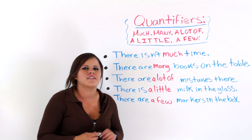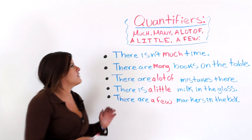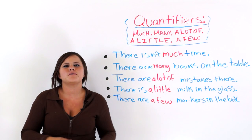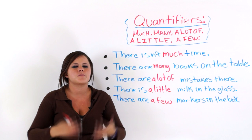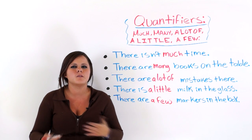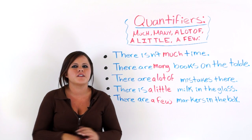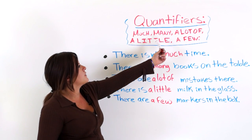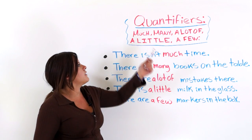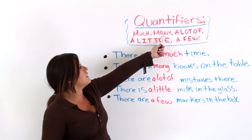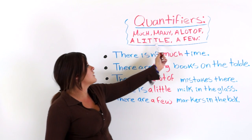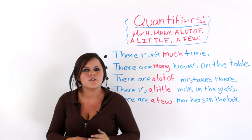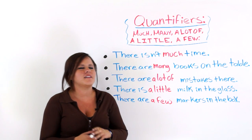Hello again, folks. Today we're going to talk about quantifiers. Quantifiers are used to express quantity — how many? How much? We have five quantifiers: much, many, a lot of, a little, and a few. I'm going to teach you how to use them correctly.